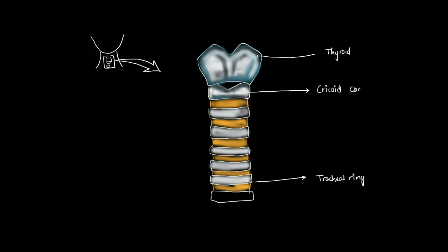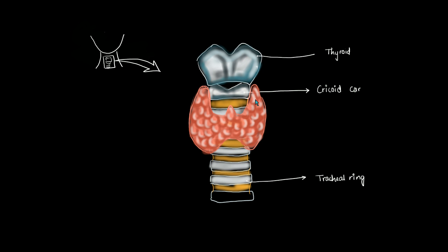Now let's see where our thyroid gland fits. The thyroid gland consists of two lobes which are connected in between by the isthmus. It's a butterfly-shaped gland — these are the lobes and this is the central connecting isthmus. There is also a projection here called the pyramidal lobe of the thyroid gland, which is not seen in all individuals.